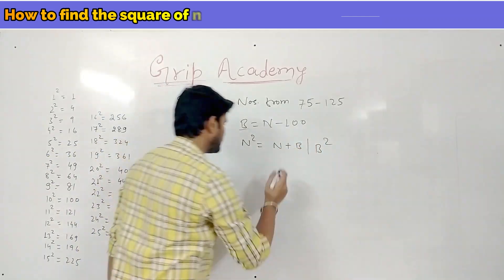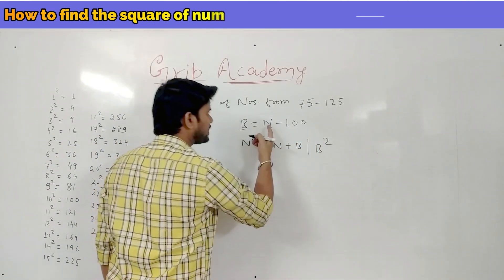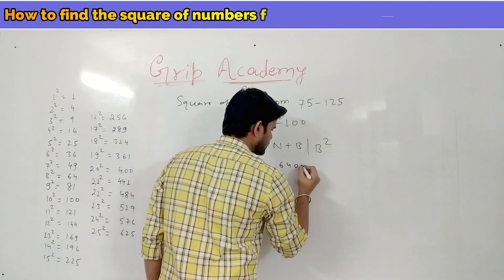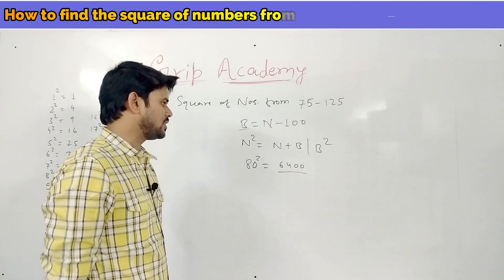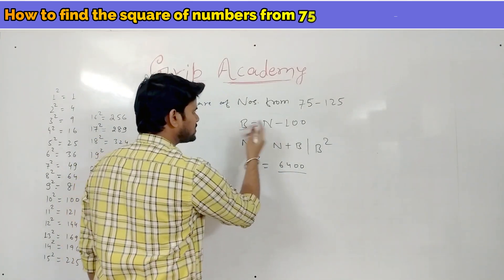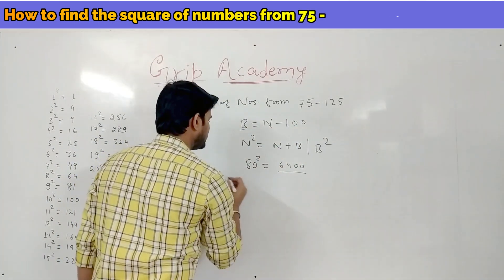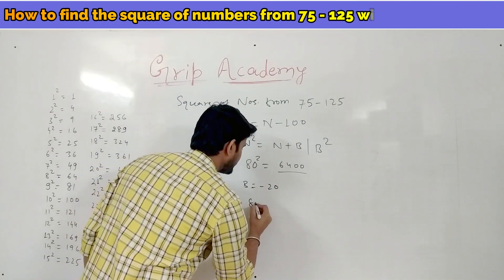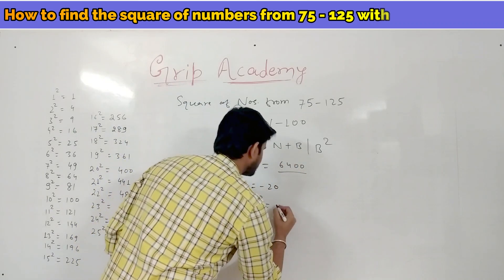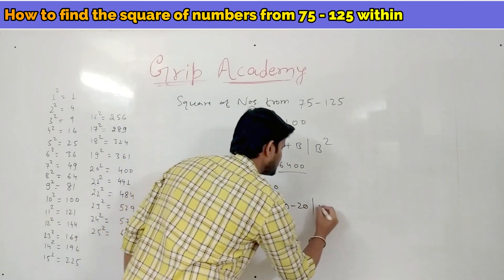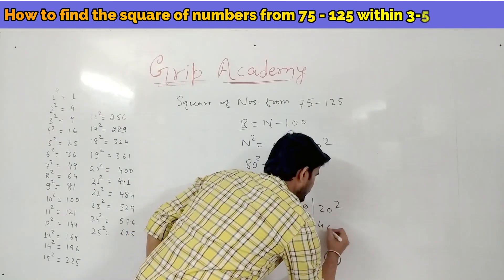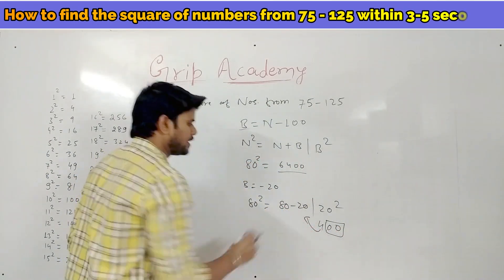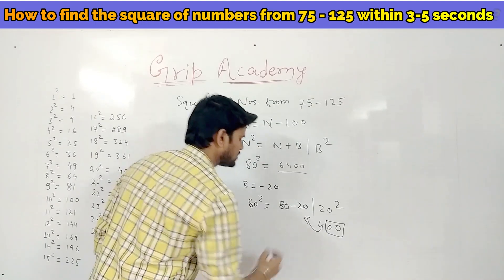Consider we have to find the square of 80. We know 80² is 6400, so let's verify with this method. Base is 80 minus 100 equals minus 20. So 80² equals 80 minus 20, slash 20 squared. 20 squared is 400, so 00 stays here and 4 is carry. 80 minus 20 is 60, plus carry 4 is 64. Answer is 6400.